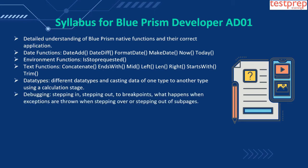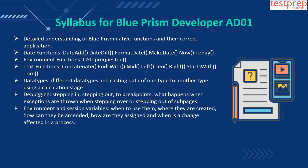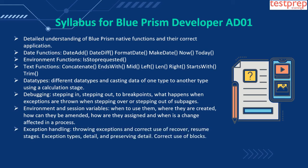Five, data types: different data types and casting data of one type to another type using a calculation stage. Six, debugging: stepping in, stepping out, breakpoints, what happens when exceptions are thrown when stepping over or stepping out of sub-pages. Seven, environment and session variables: when to use them, where they are created, how they can be amended, how they are assigned, and when a change is affected in a process.